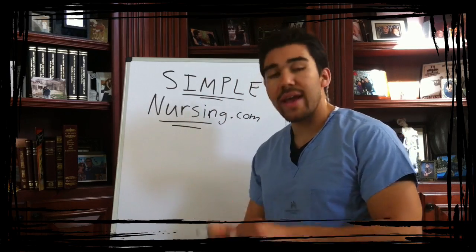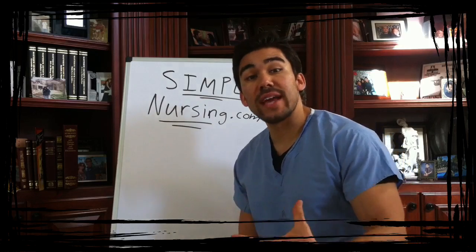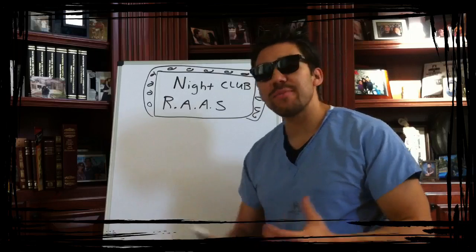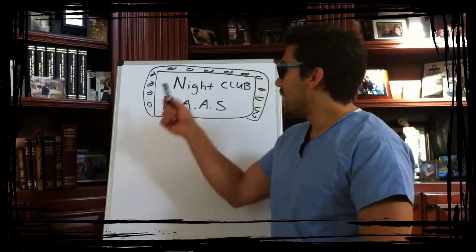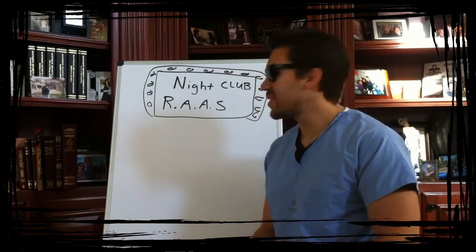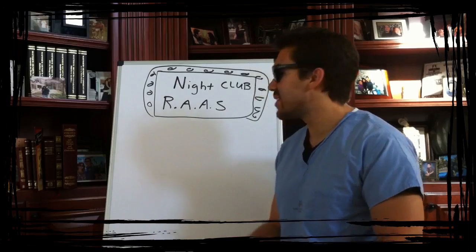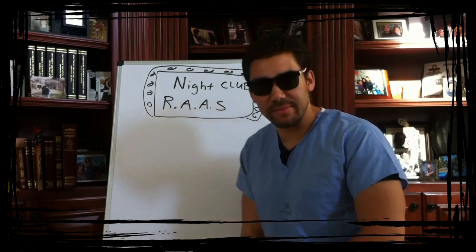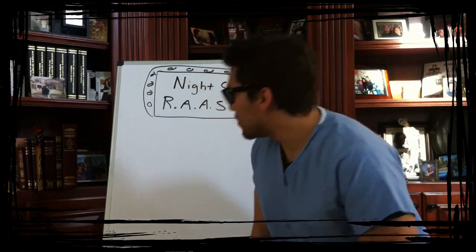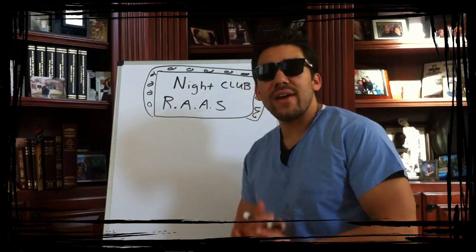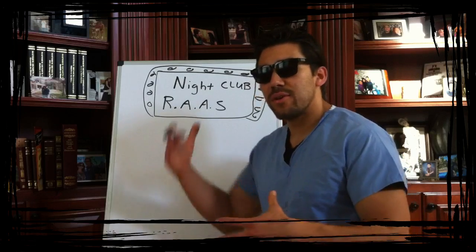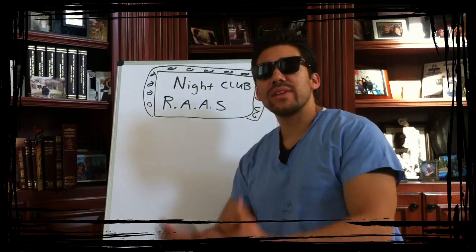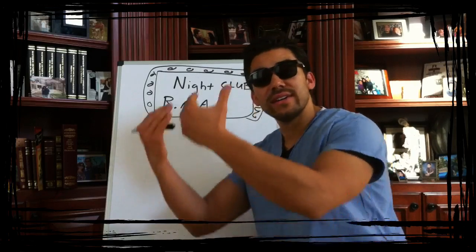Today we're going to go over how to understand ACE inhibitors. I like to understand ACE inhibitors by turning your body into a nightclub. This nightclub is called Club Raz, which helps you understand the renin-angiotensin-aldosterone system. I'm going to show you how ACE inhibitors break up the system to release fluid out of your kidneys and really cause the congestion in your heart to become decreased.